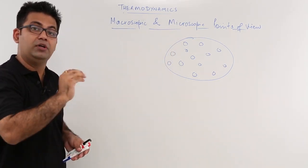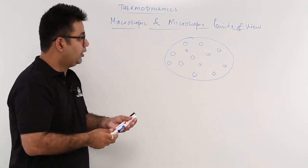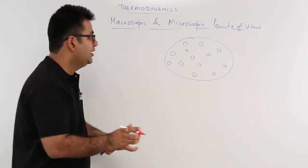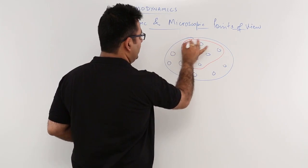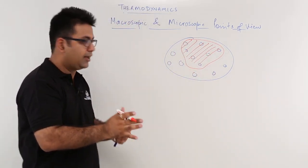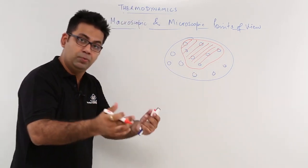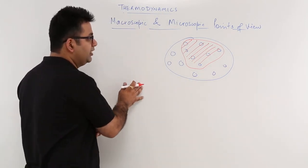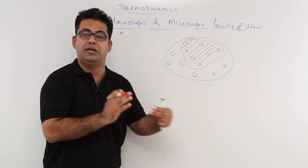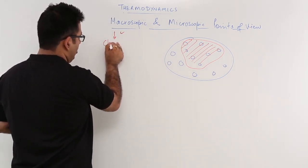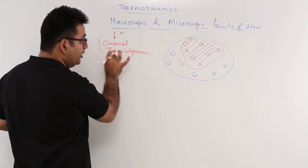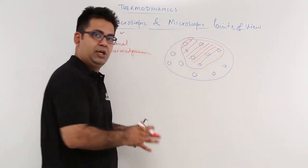The first one is the macroscopic point of view. To understand the property of a particular substance, I would have to take a collection of these molecules as one — combine all these molecules into a single entity or component. Whatever changes are occurring in this particular component would be assumed to take place for the entire substance. When we consider a bulk of molecules in a particular substance, it comes under the macroscopic study, which is also sometimes known as classical thermodynamics.